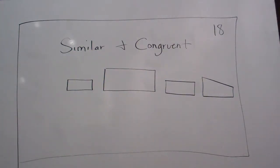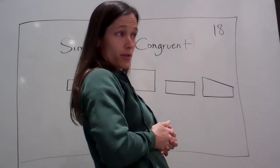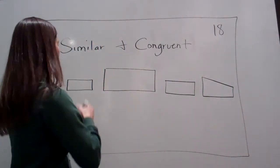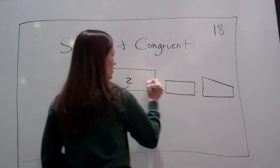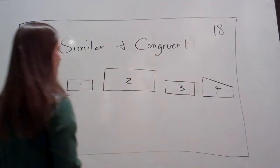We have four quadrilaterals up here, and I want to know which ones are similar and which ones are congruent. One, two, three, or four.